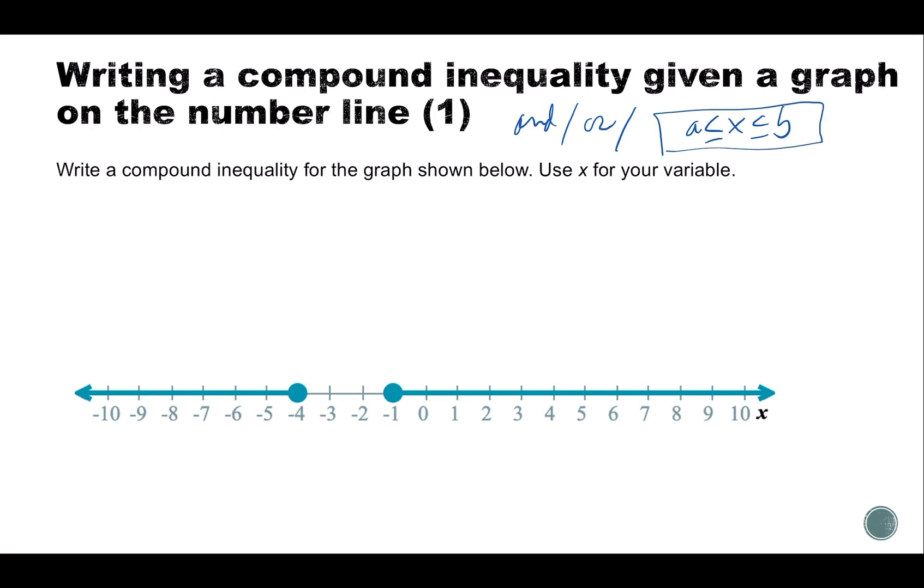We're going to write a compound inequality for the graph below and use x as our variable. Our first key is that there's a gap, which means we're going to have to use 'or'. So I have x is less than or equal to, because it's a closed dot, negative four.